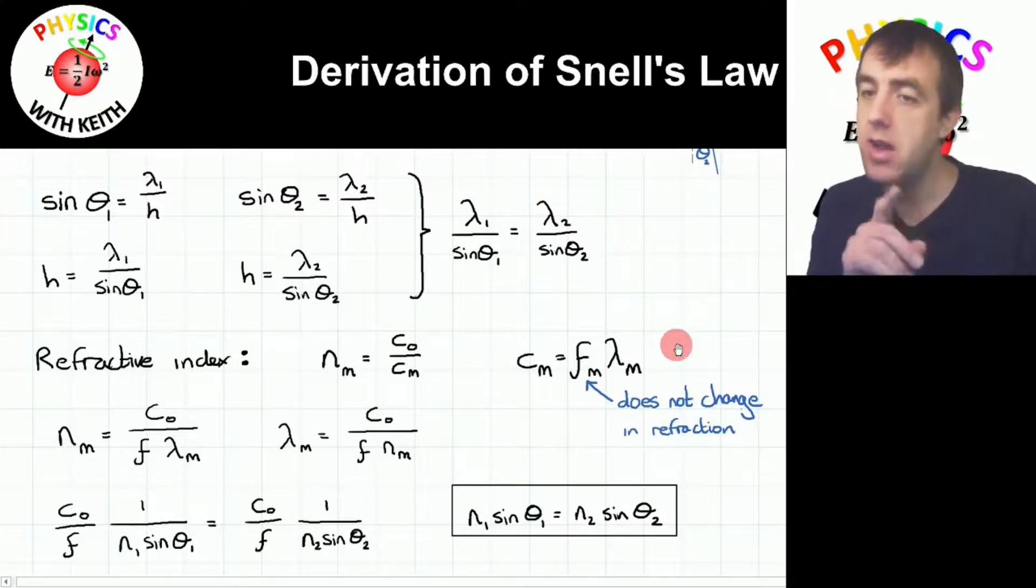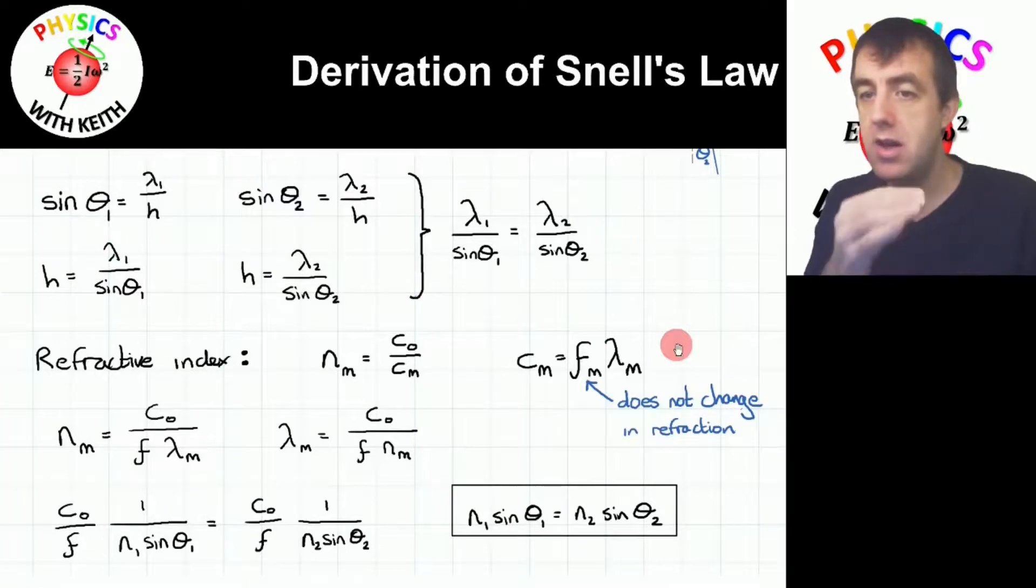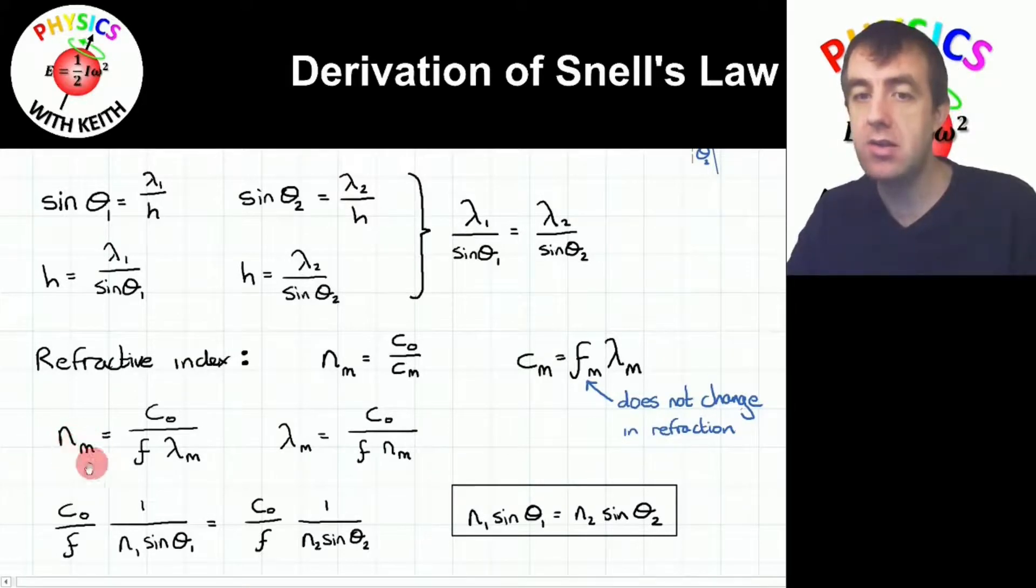Now importantly, the same number of waves per second are incident on that boundary as pass through the boundary and are refracted. Therefore, the frequency is exactly the same for the waves in medium 1 as it is for the waves in medium 2. The refractive index in medium m can therefore be written as C nought, which we have from this expression, divided by F lambda m because we're substituting this expression for C m. And I've dropped the subscript m from the frequency because it's the same for both media.